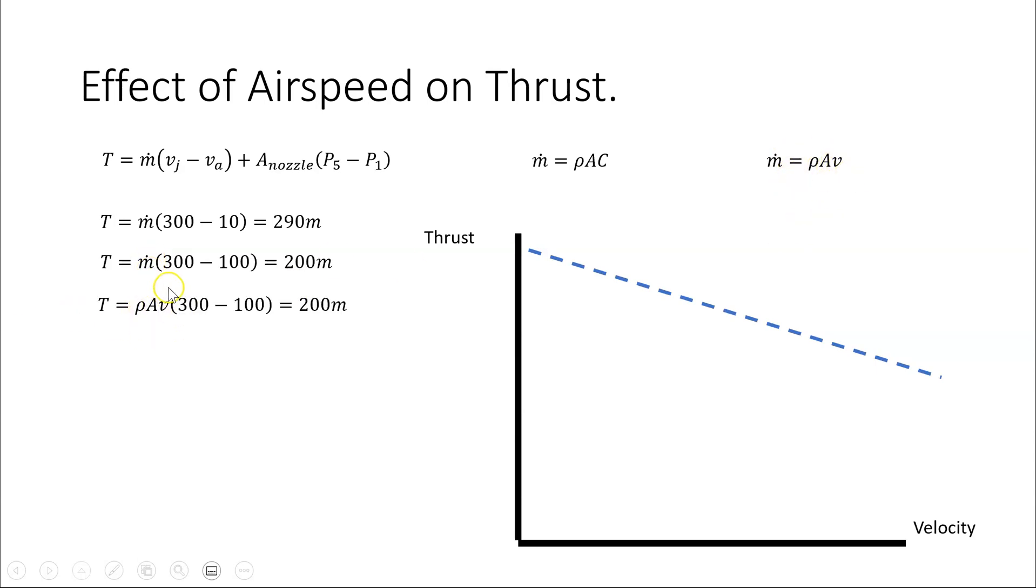However, this mass flow is equal to rho AV, and we can replace this V here with the velocity. So if it's 100 here, it's 100 here. So you can see that this has increased. So when we combine the decrease due to this part with the increase due to this part, we get an overall slight increase in thrust with velocity.